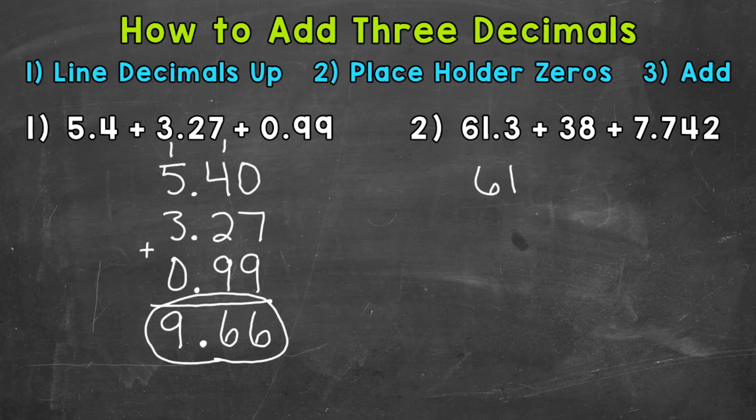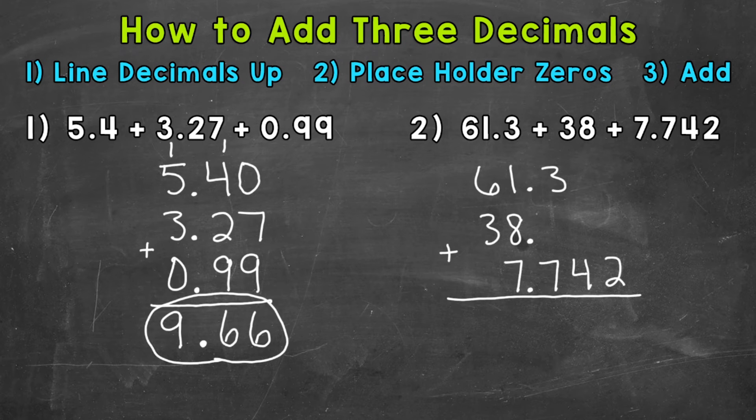Let's line this problem up. So 61.3 plus 38. Now 38 is a whole number, but it still has a decimal. Whenever you're working with a whole number and you need to line up decimals, decimals come after whole numbers. So the decimal comes after the 38. Then we have 7.742. So let's use some placeholder zeros to get this problem lined up a little better. So everything needs to go to the thousandths place. And now we're lined up and ready to add.